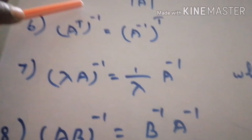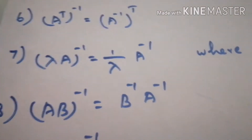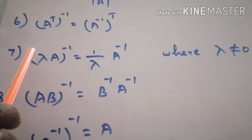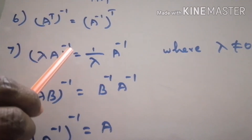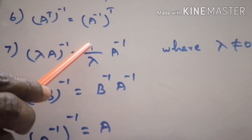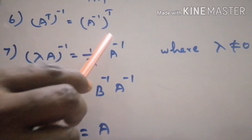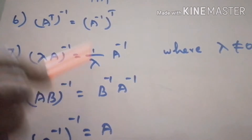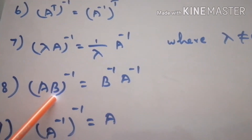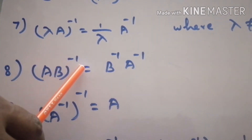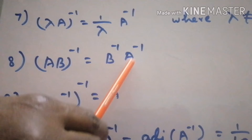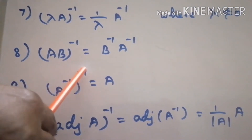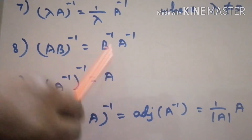A transpose the whole inverse is equal to A inverse the whole transpose. Lambda A the whole inverse is equal to 1 by lambda into A inverse, where lambda is not equal to 0. AB the whole inverse is equal to B inverse into A inverse. A inverse the whole inverse is equal to A.